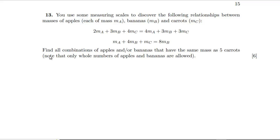Hello, continuing on with the 2023 Oxford Pack, we've got up to question 13. So you use some measuring scales to discover the following relationships between masses of apples, bananas and carrots. Find all combinations of apples and/or bananas that have the same mass as five carrots.